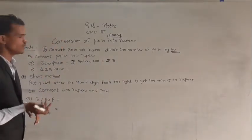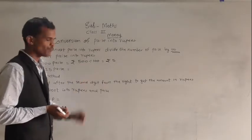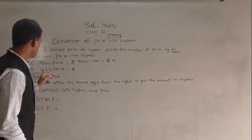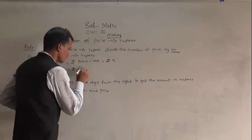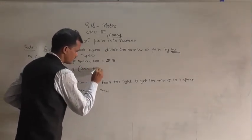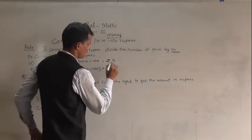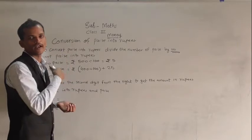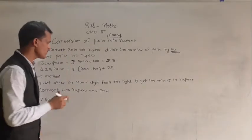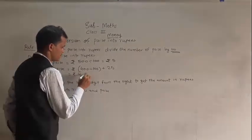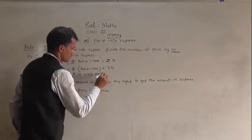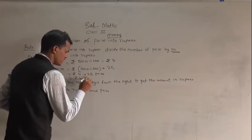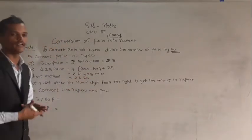The next example: 425 paise is equal to how many rupees and how many paise? See here, 425 paise — write it as 400 plus 25. Divide 400 by 100, which equals 4. So it becomes rupees 4 plus 25 paise. You can write this as rupees 4.25, meaning 4 rupees and 25 paise.